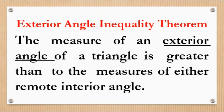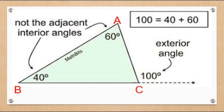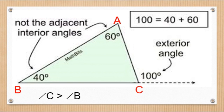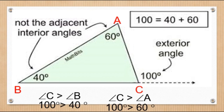Now, the Exterior Angle Inequality Theorem: the measure of an exterior angle of a triangle is greater than the measure of either remote interior angle. In the illustration, the exterior angle C is greater than angle B: 100 degrees is greater than 40 degrees. Also, angle C is greater than angle A: 100 degrees is greater than 60 degrees.